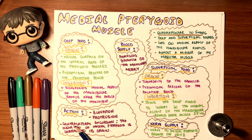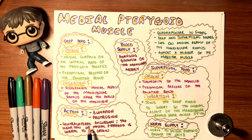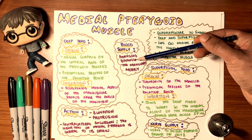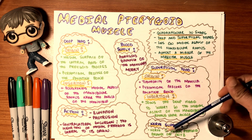The action of the medial pterygoid is elevation and protrusion — it closes your mouth and brings your chin forward. It has contralateral excursion because the insertion is lateral to its origin, meaning it moves the mandible to the opposite side. Blood supply is the pterygoid branch of the maxillary artery; nerve supply is the nerve to medial pterygoid, a branch of the mandibular nerve of the trigeminal.